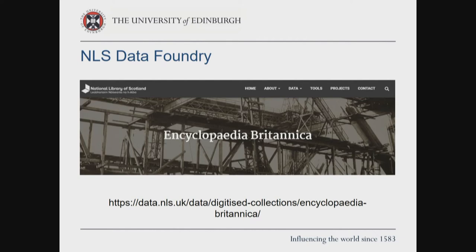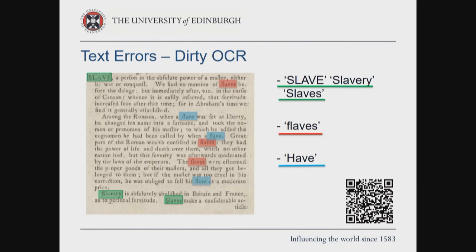Having good quality machine-processable data is crucial in text mining, and the OCR just didn't quite cut it. There were numerous errors, including misrecognition of the long S, which as someone looking at race and slavery was quite a significant issue. OCR scripts can be written in code to fix these kinds of errors, but including this and many other errors, it was going to prove too much for my research. There was also misrecognition of words like 'slaves' and 'have,' which is not particularly helpful when you're trying to find certain words in a text.